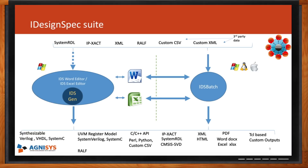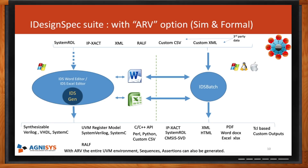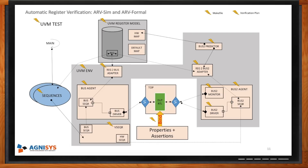Most teams these days are using or adopting UVM. One challenge for a new team is how to use UVM — creating a register model is just the start of the journey. Once you have the model, you have to integrate it into the rest of the testbench. To solve that, Agnesis created ARV, which generates the entire testbench — the sequences, tests, environment, verification plan, and makefile. It's a ready-to-use, out-of-the-box UVM-based environment that integrates the UVM register model with your design under test.